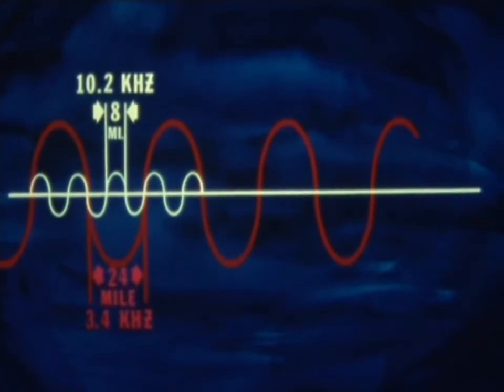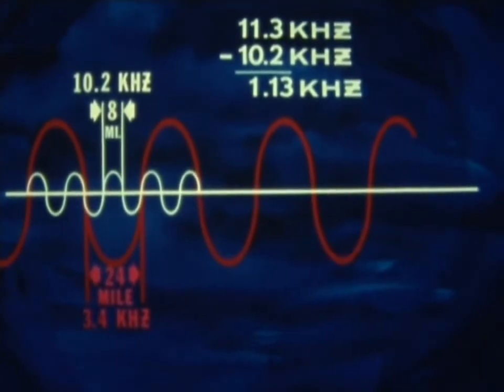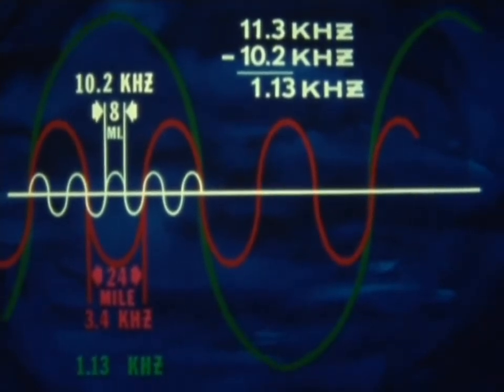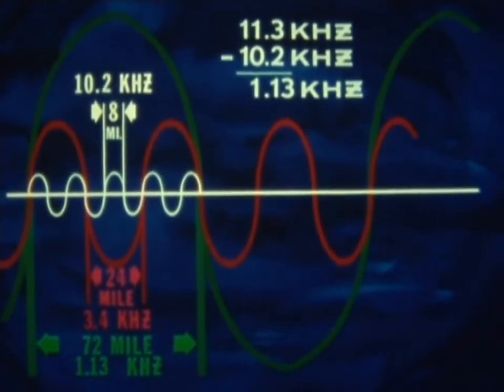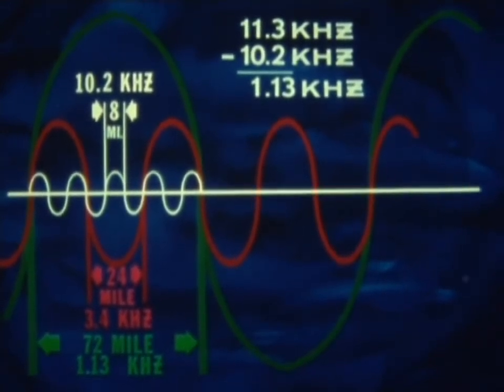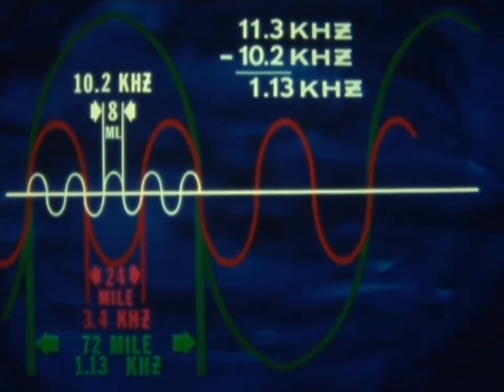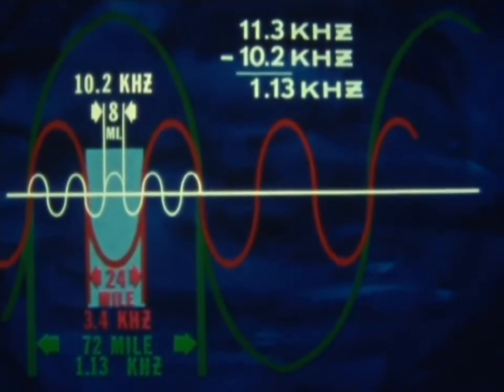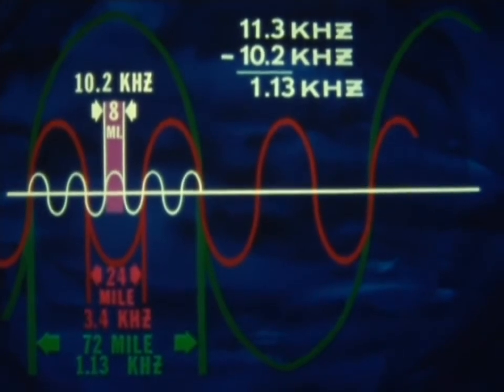Using the same procedure with the 11 and one-third kilohertz signal and the 10.2 kilohertz signal, we get a difference of 1.1 and one-third kilohertz with still wider lanes of 72 miles, which, in turn, give us a much larger margin for ambiguity. And using the same procedure, we can work our way down to a 24-mile lane and, ultimately, to an 8-mile lane.